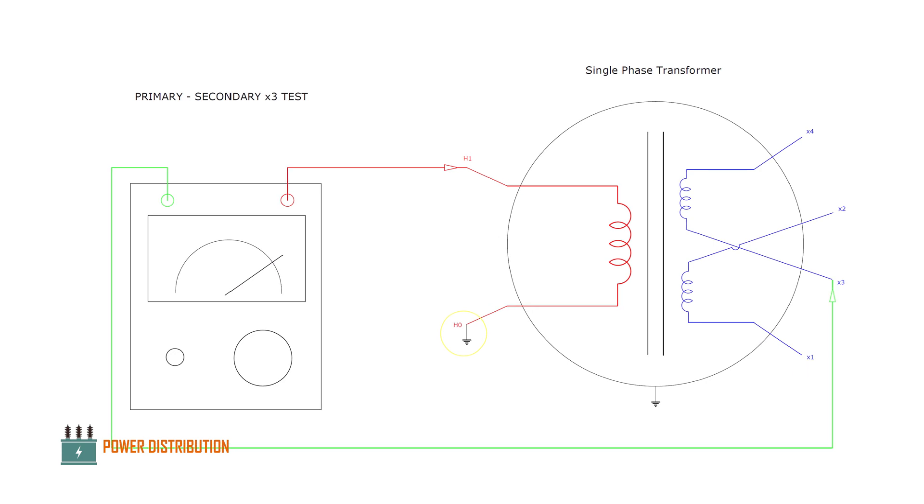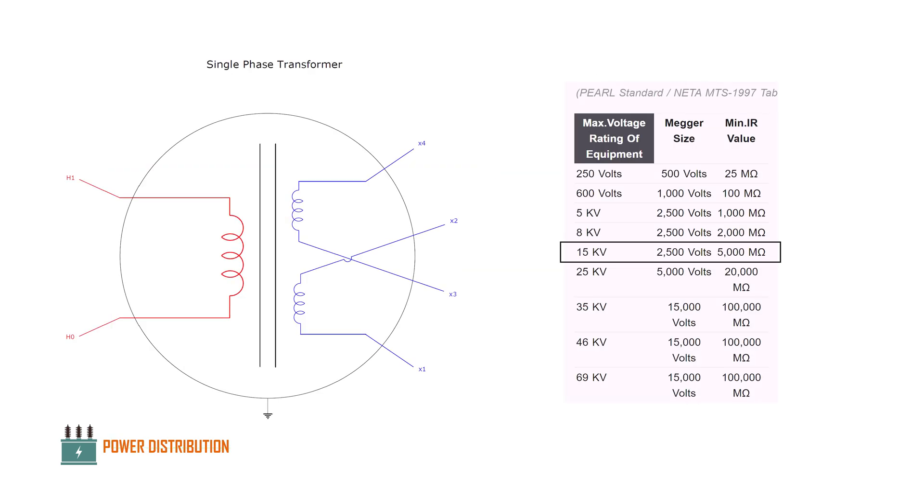Then we measure the resistance between the primary bushing with the second winding on the secondary bushing terminal. In our system voltage we use 20kV line to line, so the phase to ground voltage is around 11.7kV. The minimum insulation resistance should be around 5 gigaohms for this primary winding resistance.